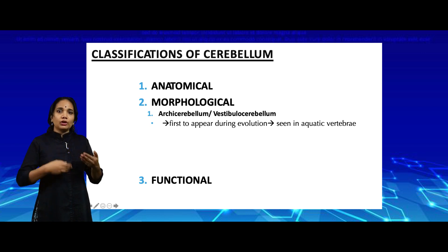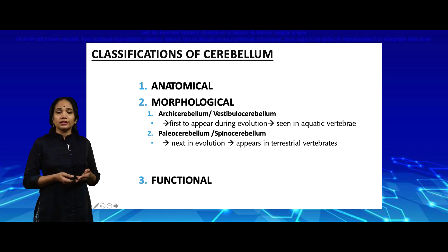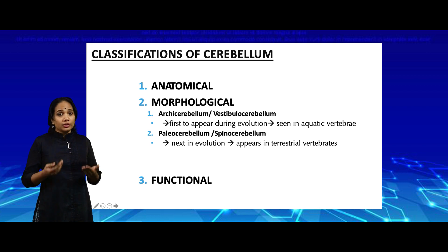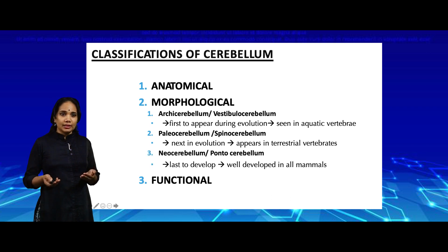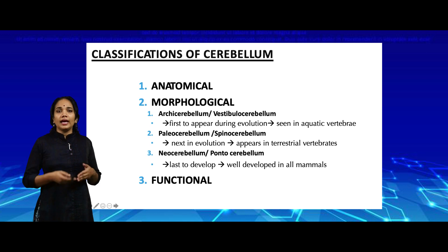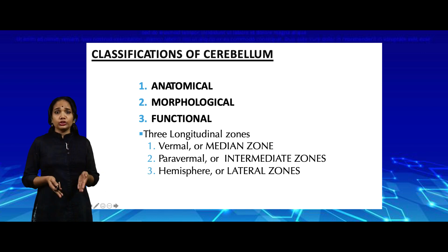Once aquatic vertebrates moved onto land, they needed muscle tone to walk, so the cerebellum developed its next component: the paleocerebellum, also called the spinocerebellum, which appears in terrestrial vertebrates. As organisms evolved further to hunt, feed, and escape, the last part of the cerebellum to develop is the neocerebellum, also called the pontocerebellum, which is well developed in advanced mammals. For the functional classification — more precisely a regional classification — the cerebellum is divided into three longitudinal zones: the vermal or median zone, the paravermal zone on either side of the vermis, and the lateral or hemispherical zones.